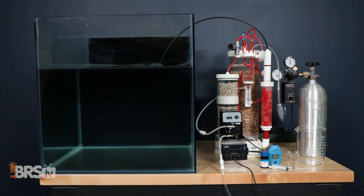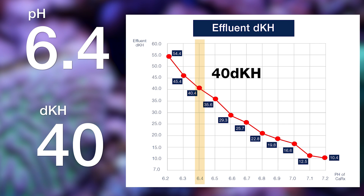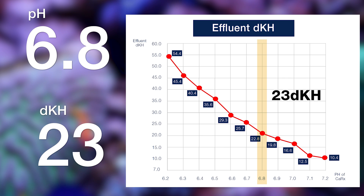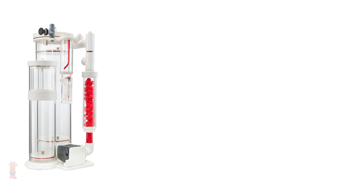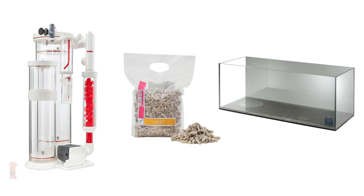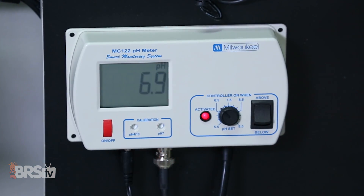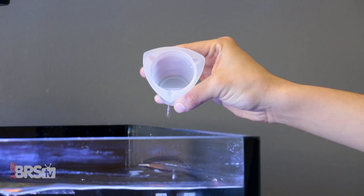In our testing example using a Vertex reactor filled with Two Little Fishies reborn media, we found that as we adjusted the pH lower or higher, there were distinct changes to the max saturation levels or concentration of calcium and alkalinity that scaled up and down with the change in pH. For example, using similar equipment, at a pH of 6.4 inside the reactor, the effluent should maintain a fairly stable concentration of around 40 dKH alkalinity, and at a higher pH of 6.8, which dissolves the media slower, we could expect a lower but stable concentration of around 23 dKH. So if we peg the pH inside our reactors using a pH probing controller, we should be able to create a fairly stable concentration of effluent to be dosed in the tank, much like Two Part.